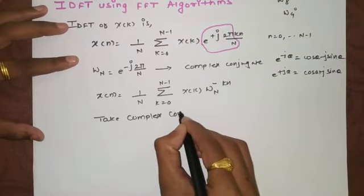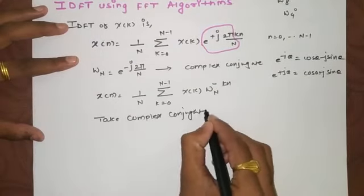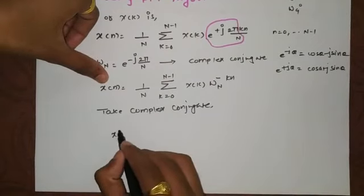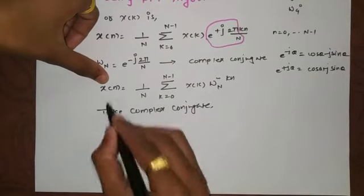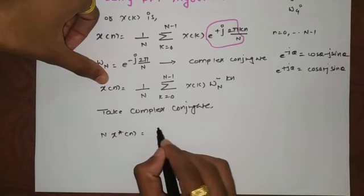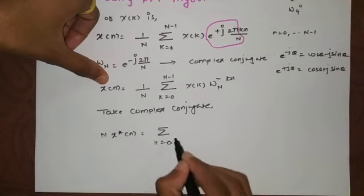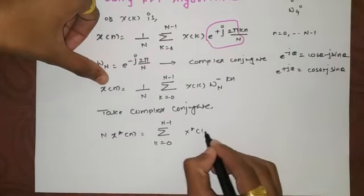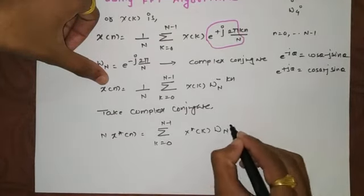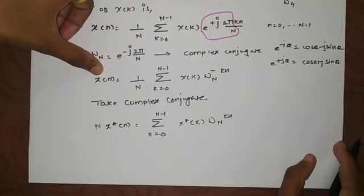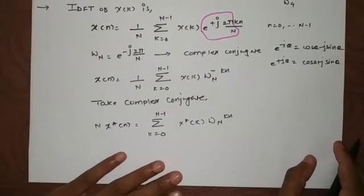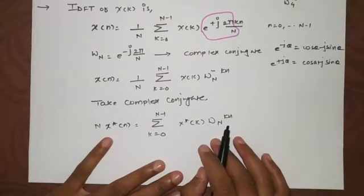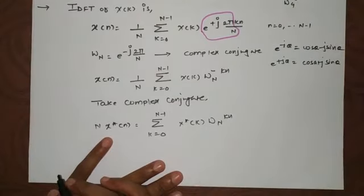Taking the complex conjugate on both sides: x(n) becomes x*(n). We then multiply by the number of samples N, and the summation term from 0 to N minus 1 becomes x*(k) times omega_N raised to plus k n. This means we can now find the Inverse Discrete Fourier Transform using the standard FFT butterfly structure.